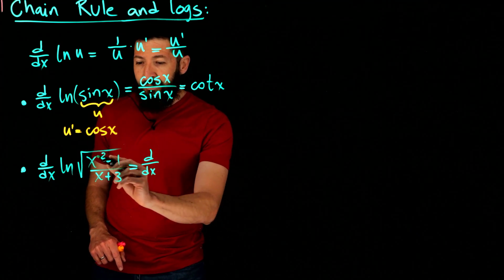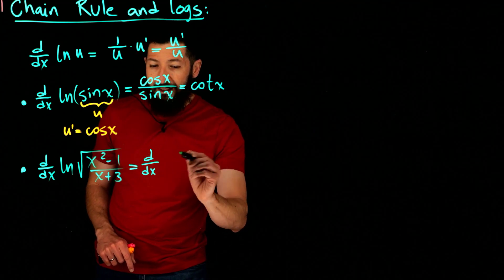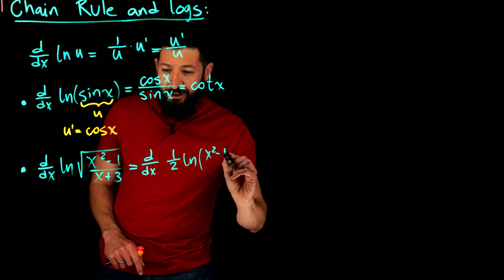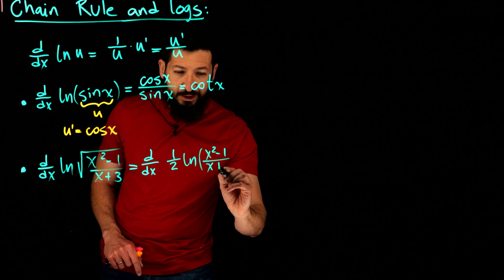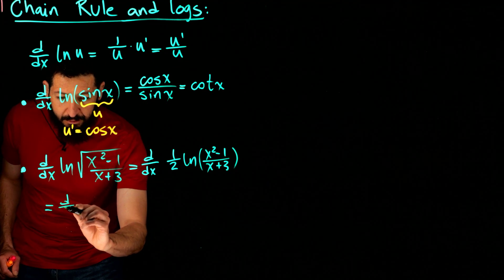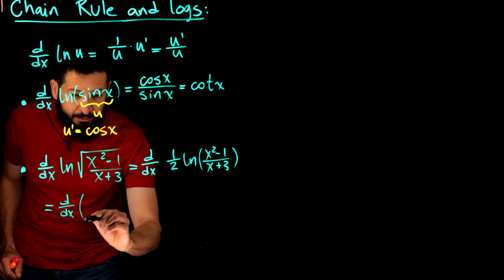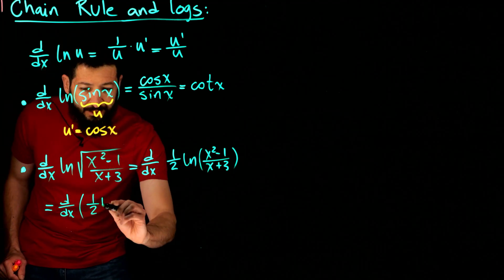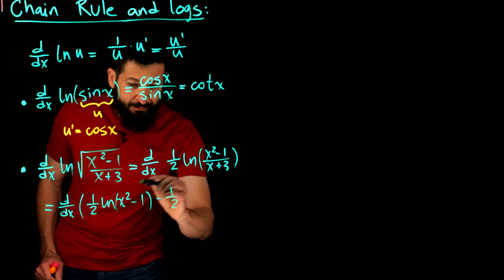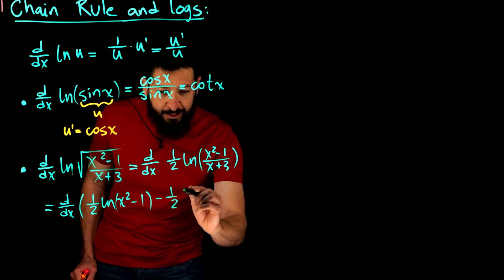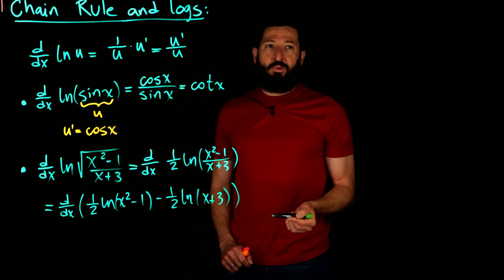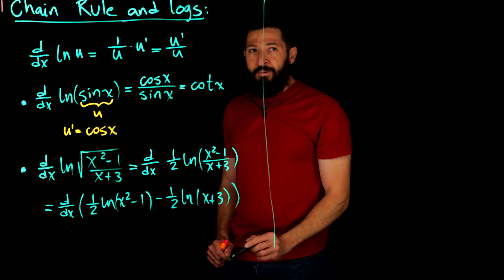For example, the square root exponent can be written as one half in front of the logarithm, and just like that, your expression already looks much nicer. You can then distribute that one half and split the logarithm, remembering the one half applies in front of both terms.